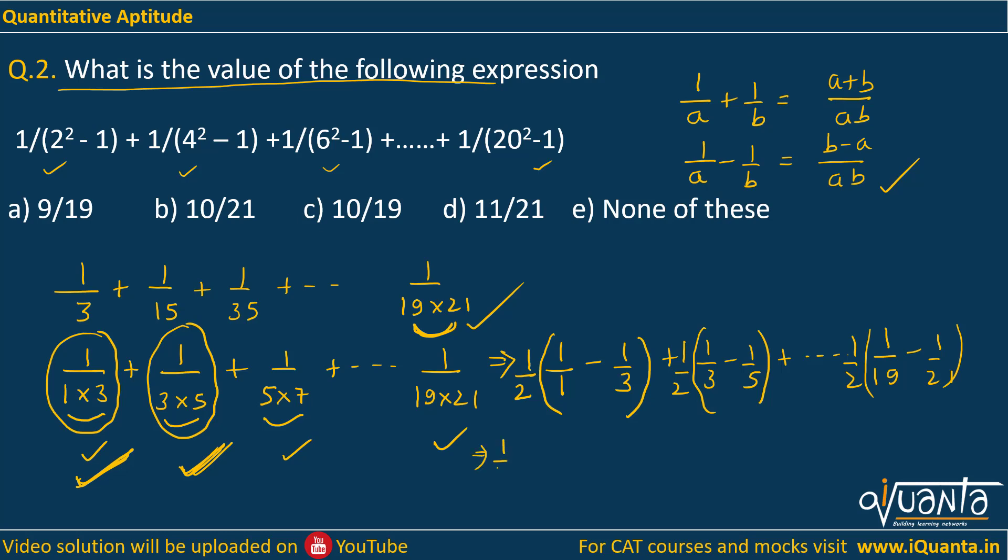Now since all the terms are 1/2, I can take it common. I will get 1 - 1/3 + 1/3 - 1/5 + 1/5 - 1/7, up to 1/19 - 1/21. So now we can see here that 1/3, 1/3 is being cancelled, again next two terms, again next two terms, all are being cancelled. So till 1/19, everything will be cancelled. At last, this 1/21 will remain because we do not have any term which can cancel it.